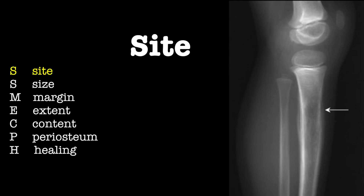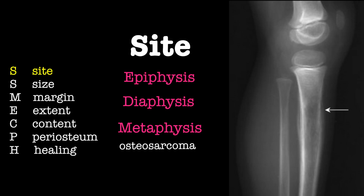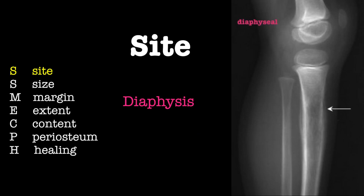S is for sight. First, determine the location of the lesion. Is it in the epiphysis, diaphysis, or metaphysis? This is important as there are lesions which usually involve certain regions, such as osteosarcomas, which usually occur in the metaphyseal region. The lesion is seen here as a diaphyseal one.